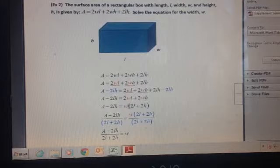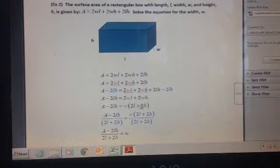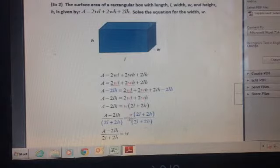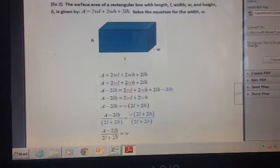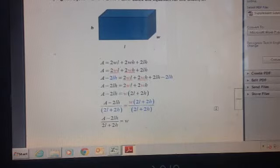We want to get w by itself. Just like in the other example, we're going to divide out this other factor. I divide both sides by (2l + 2h), and that leaves me with w alone. w equals (A - 2lh) / (2l + 2h). So I've solved this equation for w. I hope this has helped with these more complicated equations where we have to factor out first. Thank you.